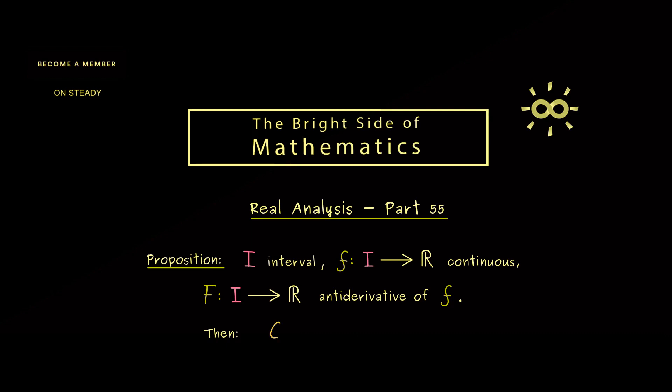Now this function capital G could be another antiderivative of f. However, it turns out this is the case if and only if the function given by F minus G is a constant function. In other words, each antiderivative of f is given by capital F plus a constant. Therefore, you can say if we ignore such constant terms, the antiderivative is indeed uniquely given.